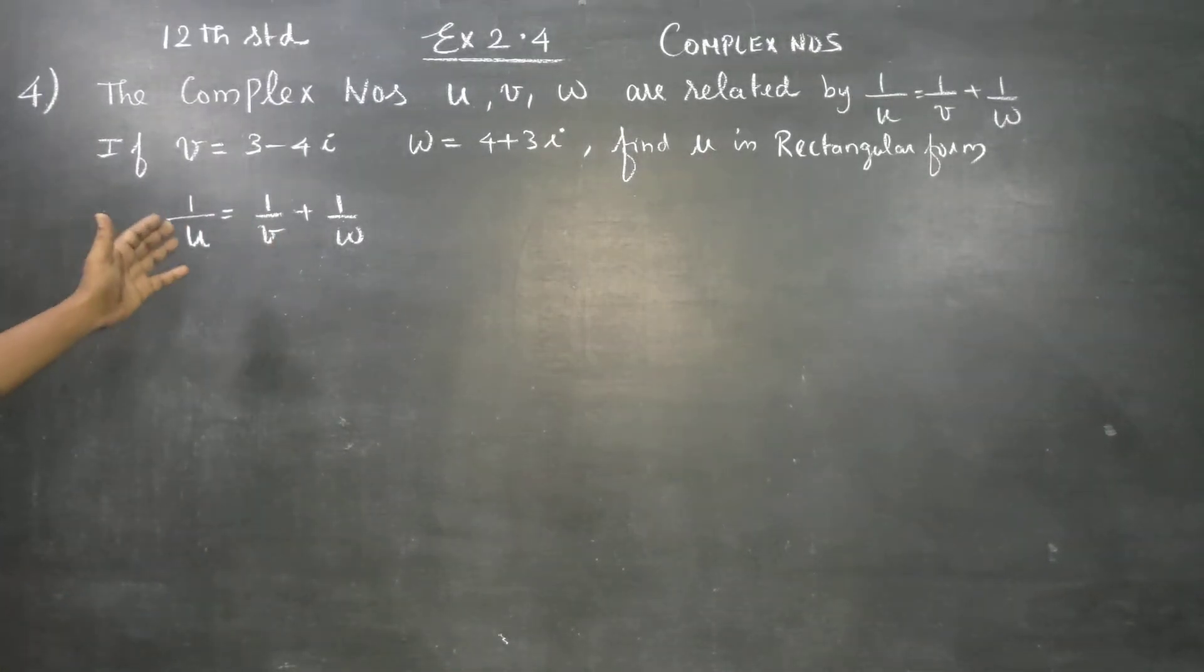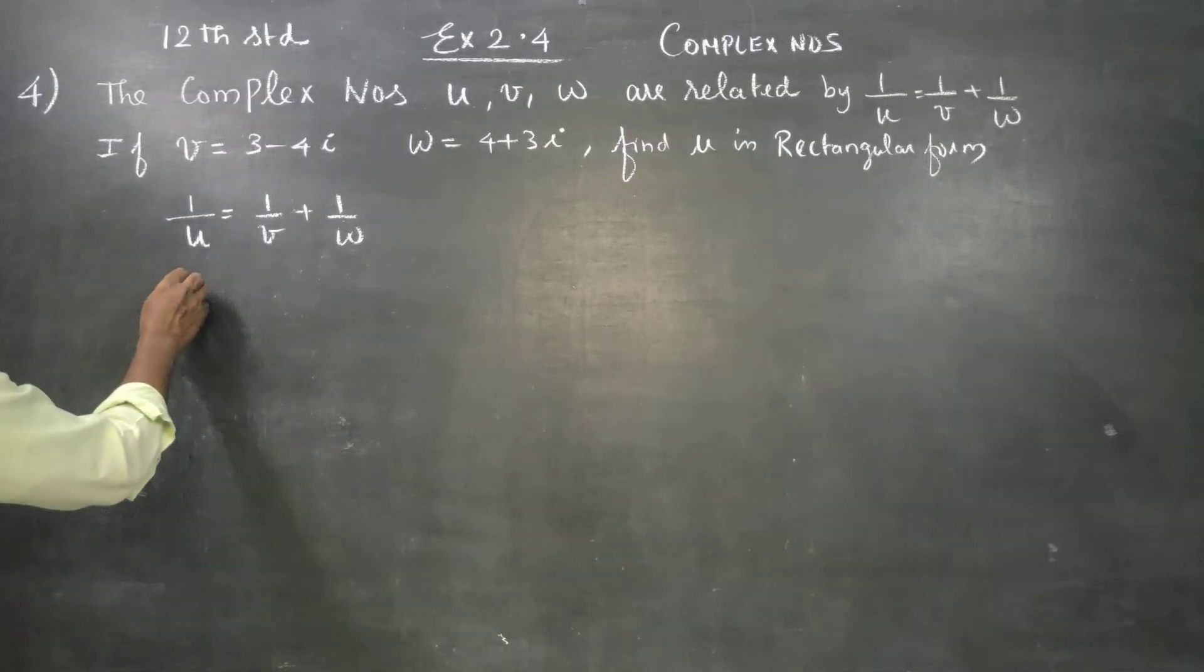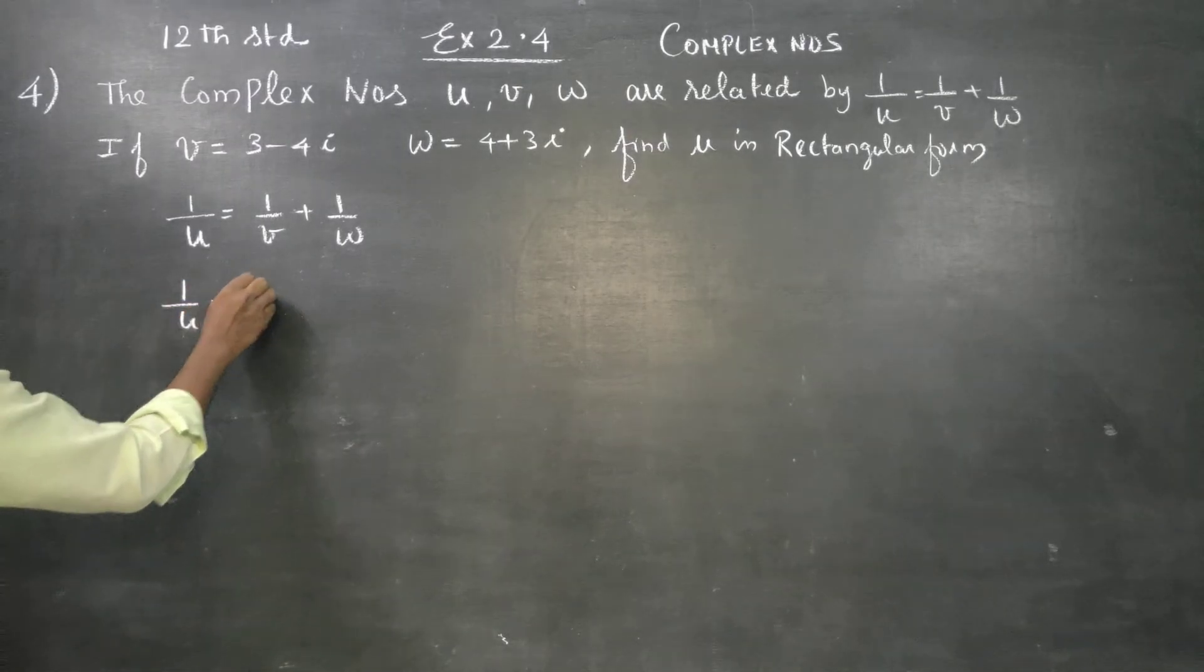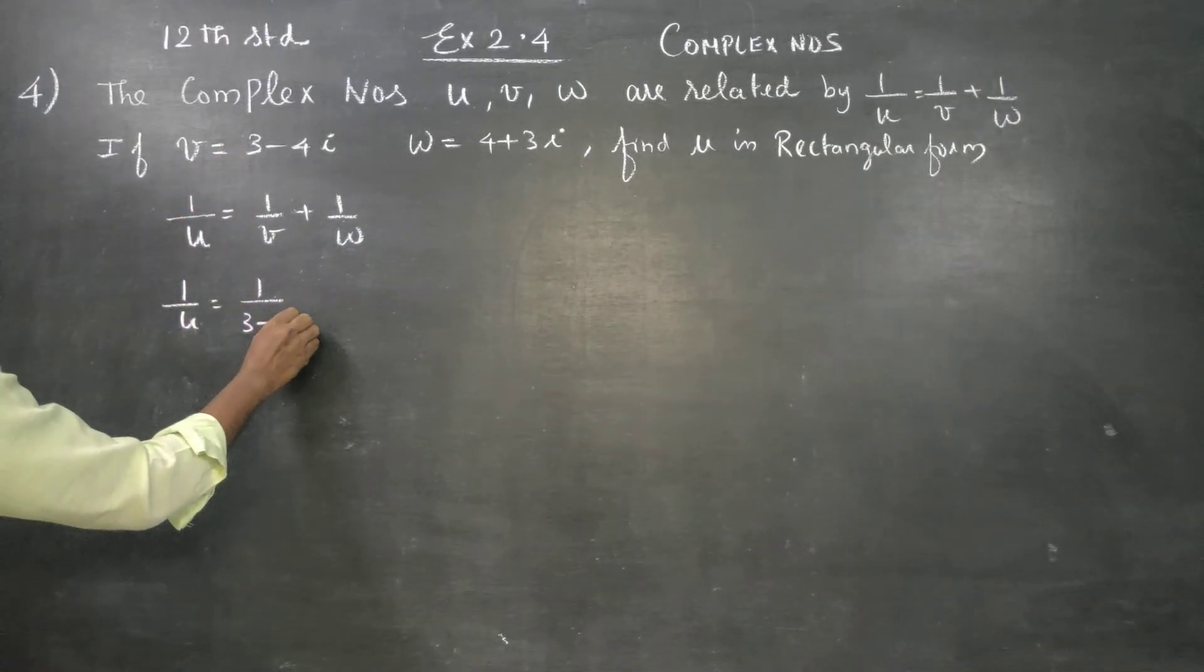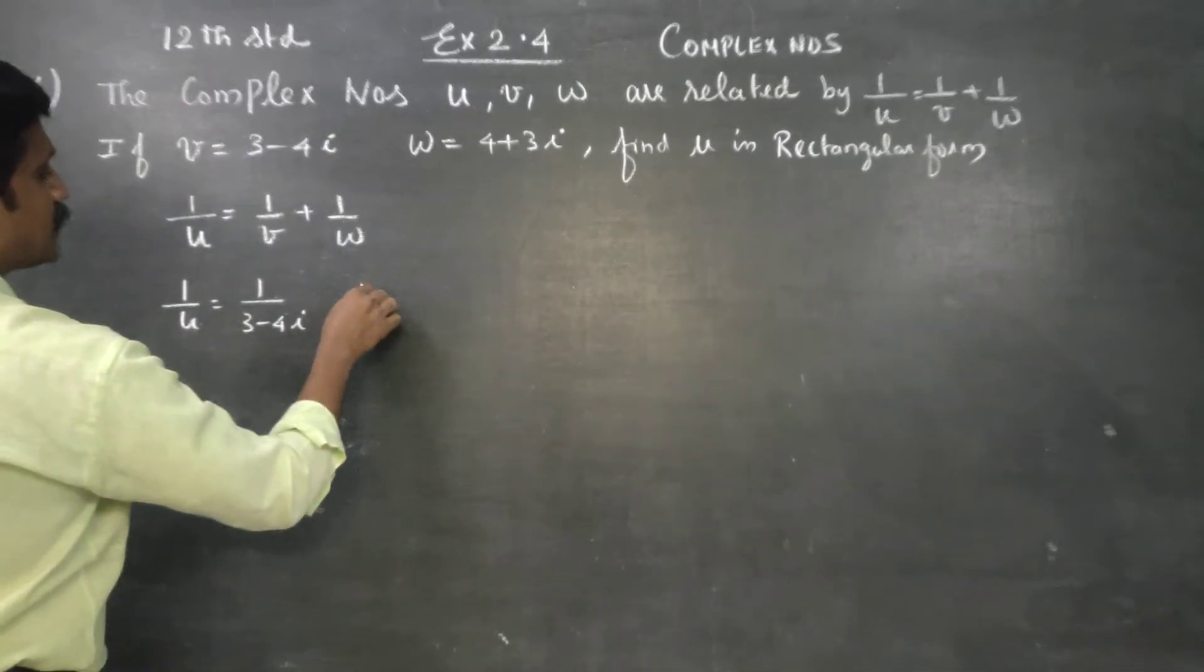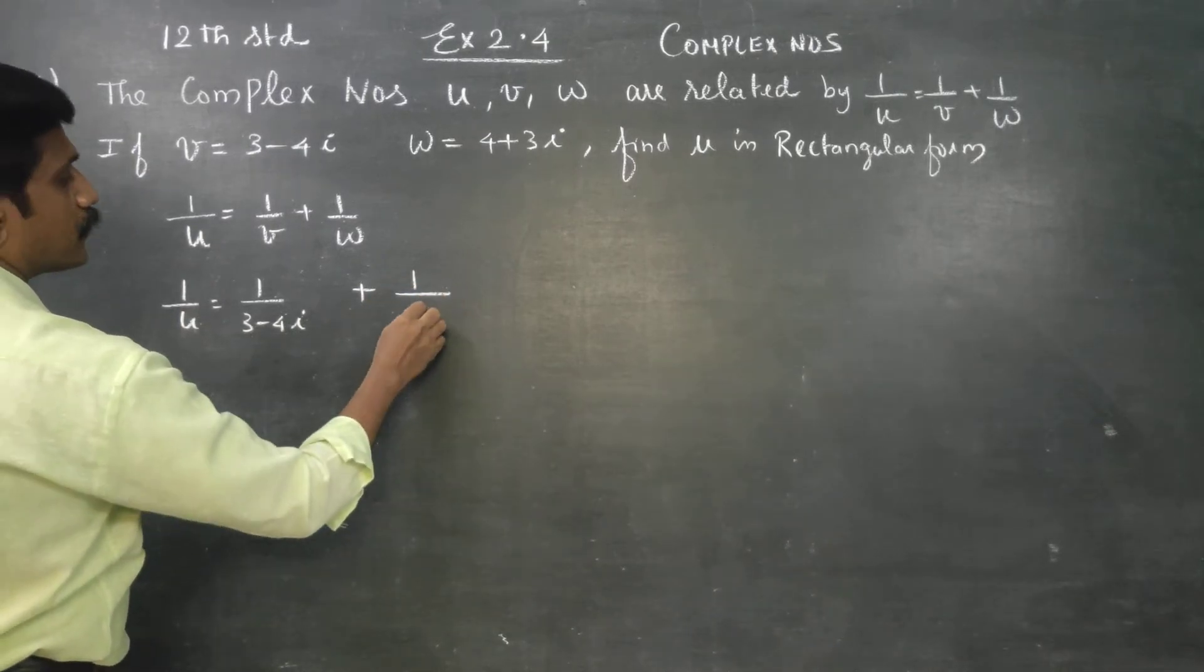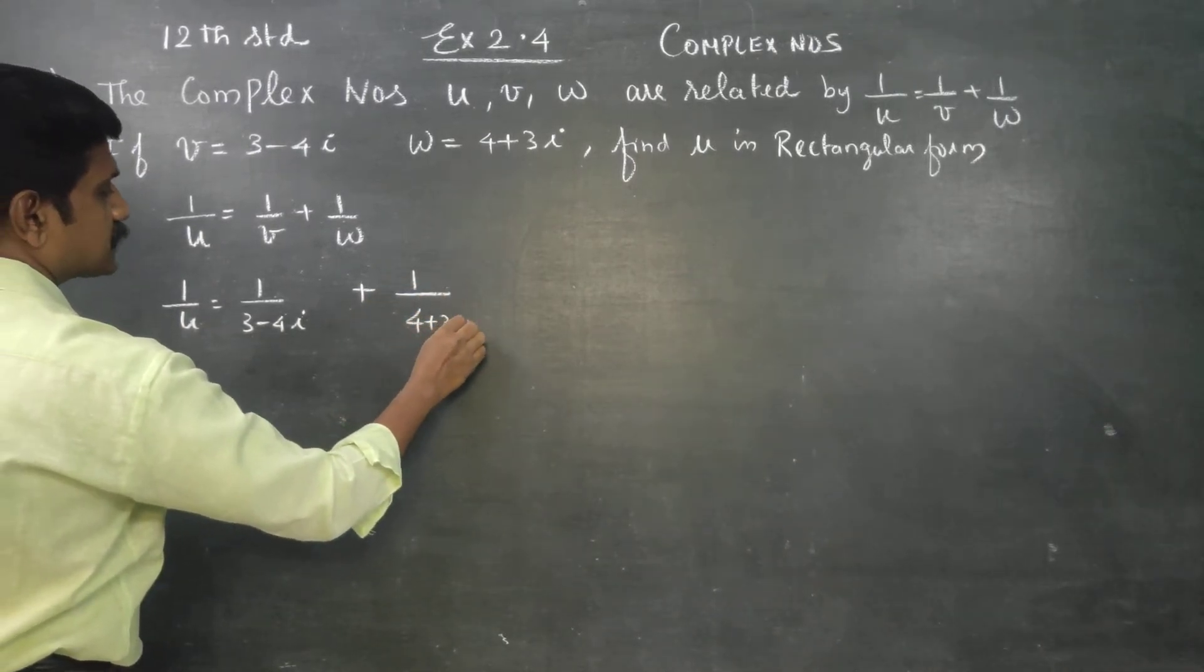1/u is equal to 1/v plus 1/w. 1/u, what is 1/v? v is 3 minus 4i. What is w? 4 plus 3i.